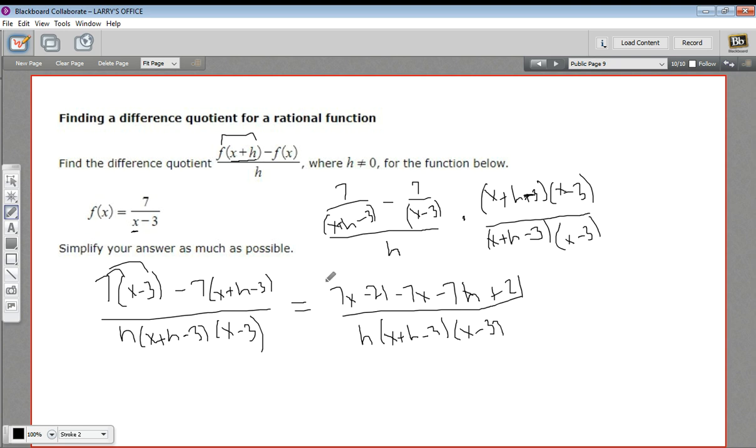On top, I see that I have a 7x and a negative 7x right there. I have a negative 21 and a positive 21. So all I'm left with on top is negative 7h.